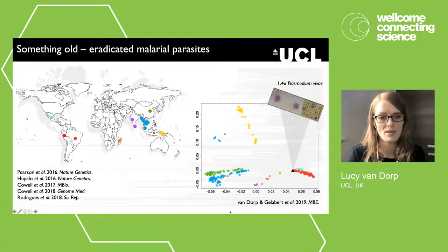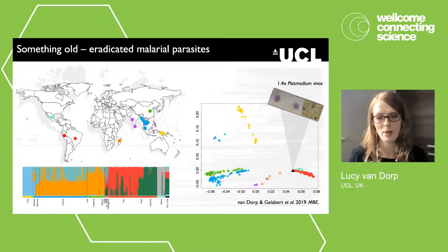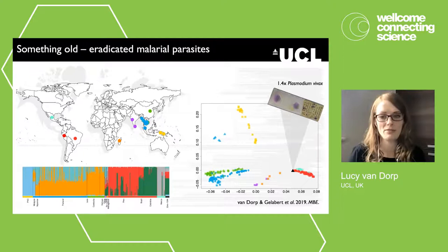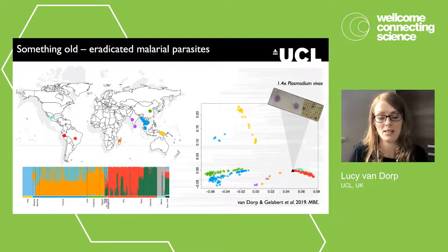The eradicated European P. vivax sits closest to samples from the Americas — Mexico, Brazil, Colombia, and Peru — a relationship supported using model-based clustering, correlated patterns of drift using f-statistics, and chromosome painting. Given this robust relationship, the question becomes: is the split between European and American vivax very old, perhaps relating to the initial peopling of the Americas around 15,000 years ago, or is it something that happened much more recently?